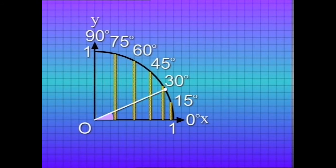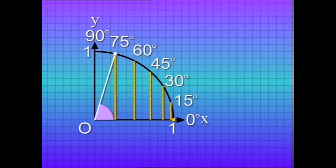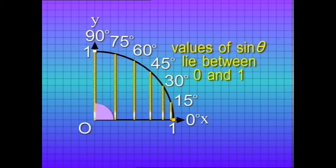From the diagram it can be seen that as angle theta increases, sine theta also increases. When theta approaches zero degrees, sine theta approaches zero; when theta approaches 90 degrees, sine theta approaches one. Therefore the values of sine theta lie between zero and one. That's how the values of the sines of angles are worked out.